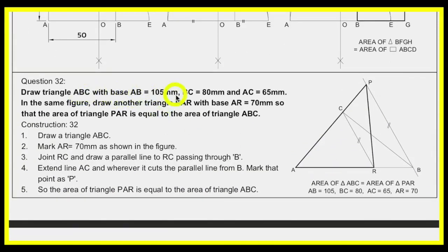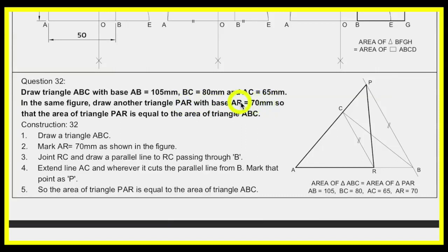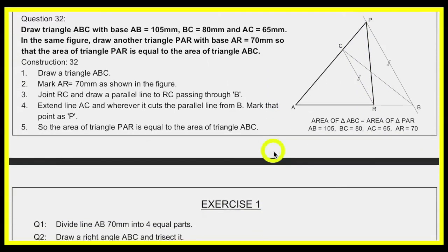For triangle conversion with a new base: given triangle ABC (AB = 105, BC = 80, AC given), draw triangle ABC. They want triangle PAR with base AR = 70 having the same area. Take AR = 70, join R to C, draw a parallel line through B. Instead of triangle RBC, take triangle RPC — this gives the required triangle with equal area.